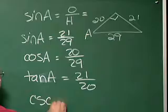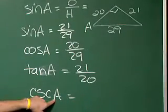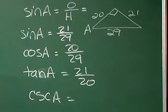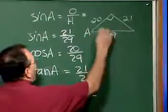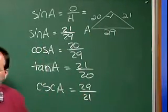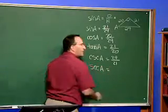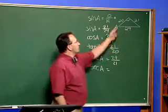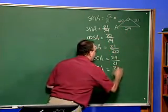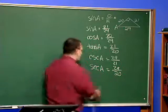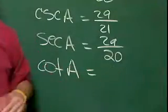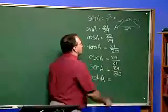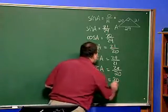For the cosecant of A, we can look at that as simply the reciprocal of the sine of A, or with our new definitions, it's the hypotenuse over the opposite. So cosecant of A is 29 over 21. For secant of A, that's the hypotenuse over the side adjacent: 29 over 20. And for cotangent of A, that is equal to the adjacent side over the opposite side: 20 over 21.